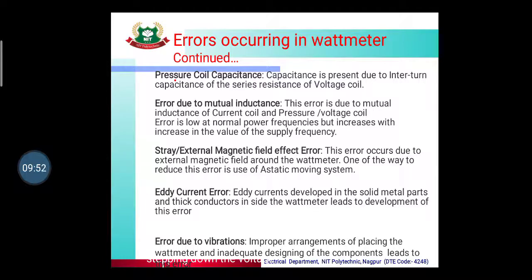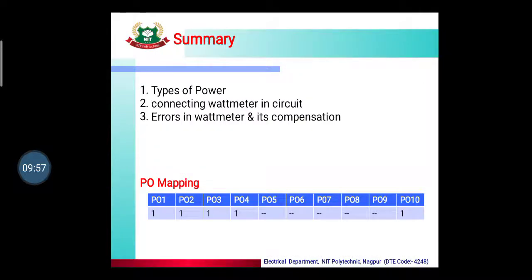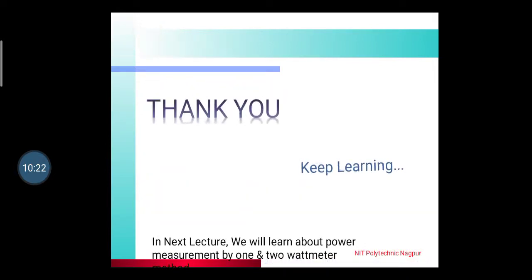To summarize, in today's lecture we studied the various types of power — active, reactive, and apparent — what the power triangle is, how the watt meter is connected in a circuit, and the different errors with their compensation. By this lecture we have mapped PO 1, 2, 3, 4 and PO 10. In the next lecture we are going to learn about power measurement using the 1, 2, and 3 watt meter methods. Keep learning, thank you.